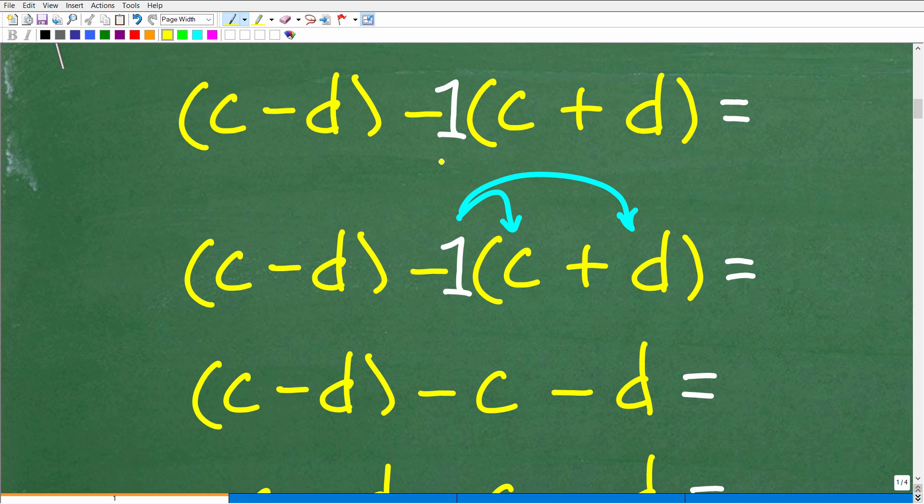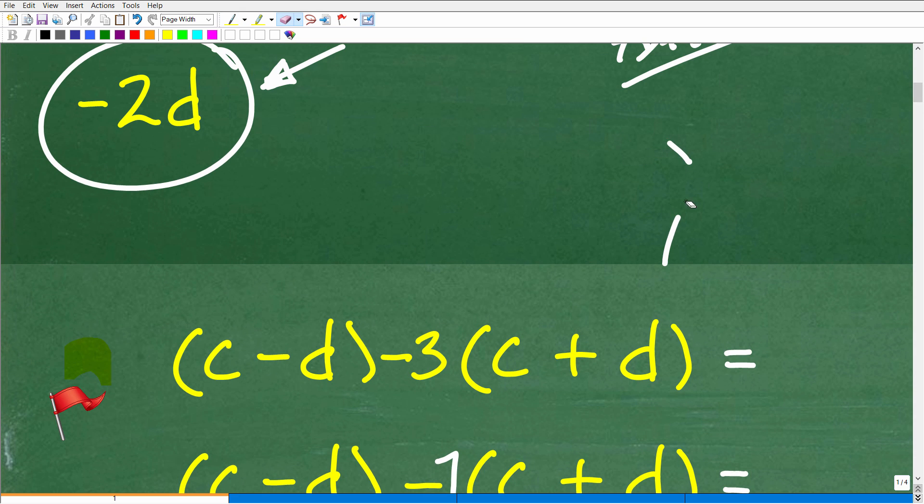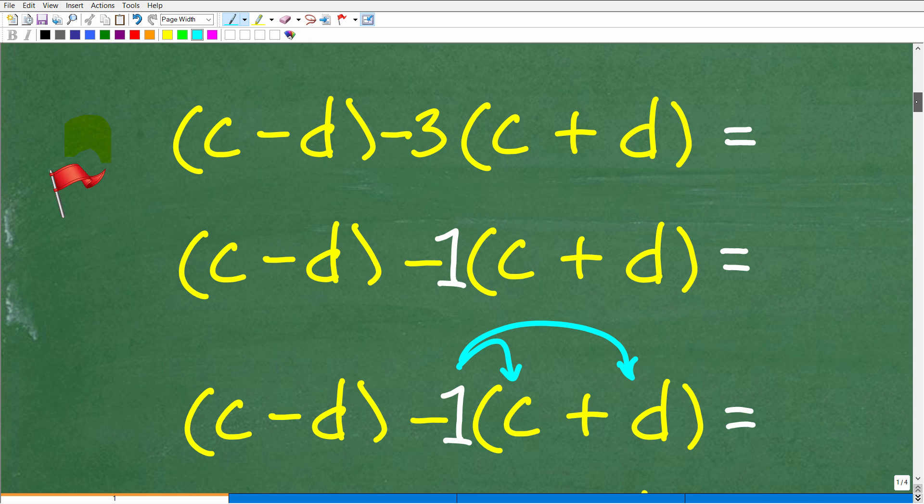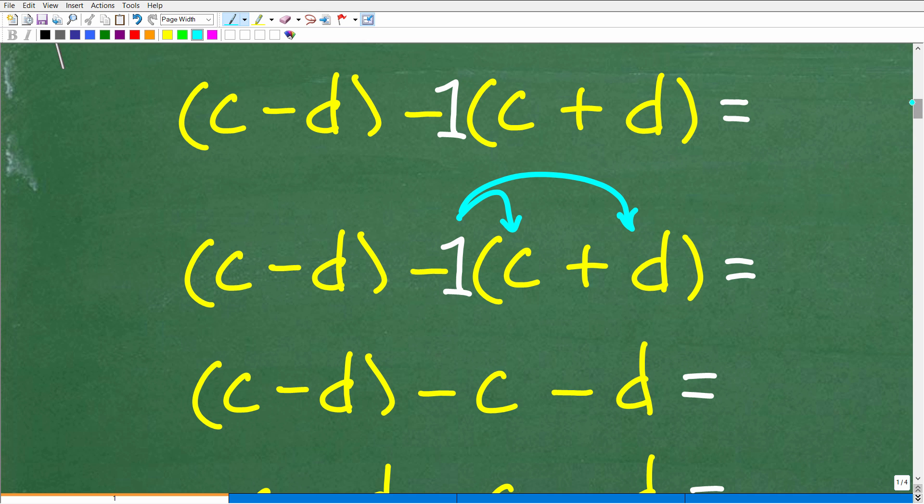So here we have this negative one, and we're going to take this negative one and distribute it to the inside terms. For those of you who forgot what the distributive property is, let's do a fast review. If we have 2 times X plus 4, that's going to be equal to 2X plus 8. This outside number being multiplied by a sum or difference, you're going to distribute it to the inner terms of that sum or difference. So 2 times X is 2X, 2 times 4 is 8. This is an illustration of the distributive property. Now, if any of this stuff I'm doing is not quite making sense, you might want to check out my pre-algebra course.